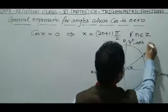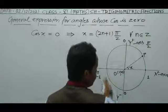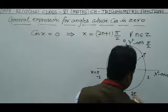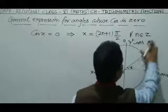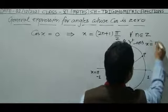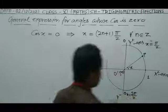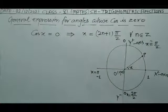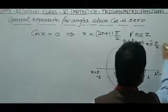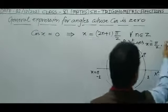So the angle is π/2 here. Then 3π/2, and continuing: 4π/2 which equals 2π, then 5π/2, then 7π/2, and so on.